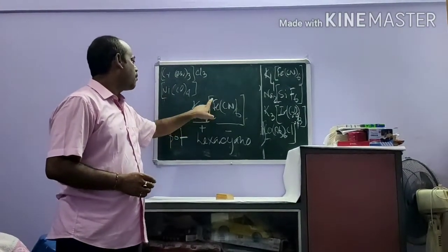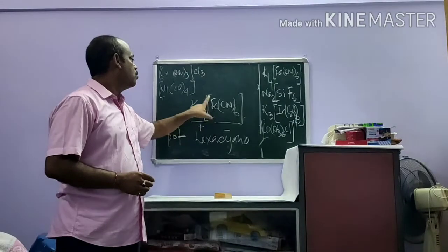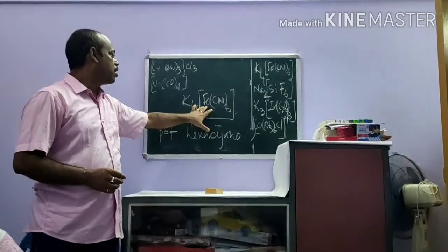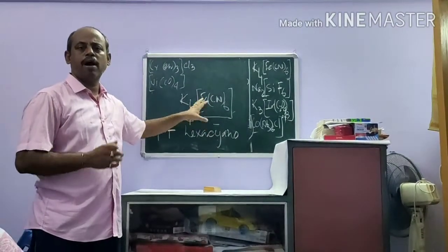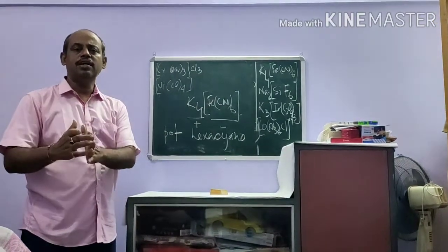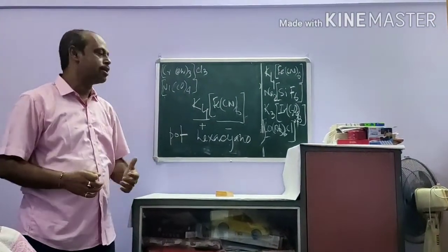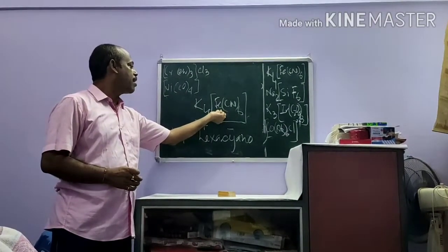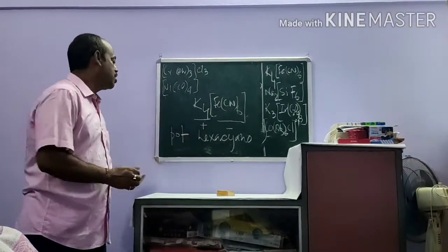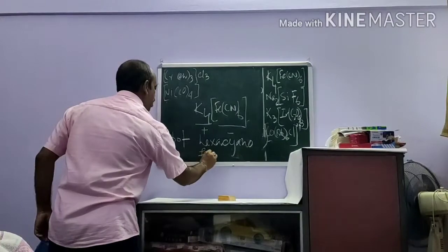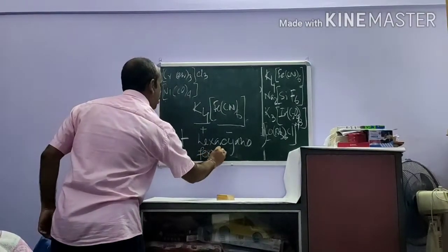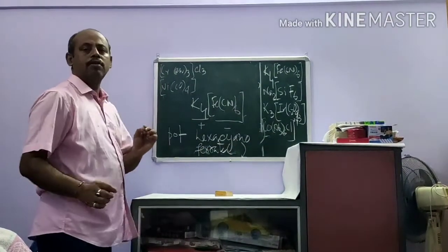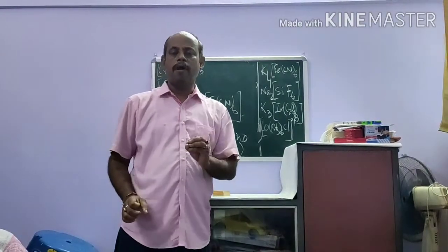Then the main thing is the metal atom. Here the metal atom is in the negative sphere. So as per rule you have to name the metal atom by adding '-ate' to the name of the metal. So it will be ferrate (F-E-R-R-A-T-E). The name becomes: potassium hexacyanoferrate.